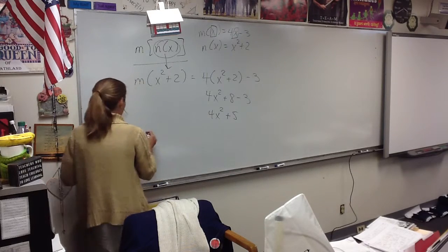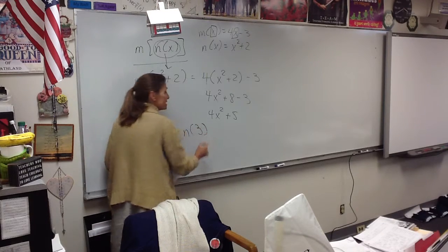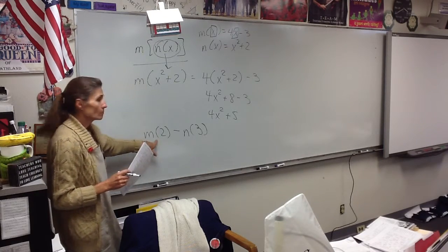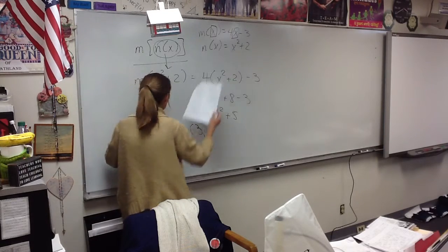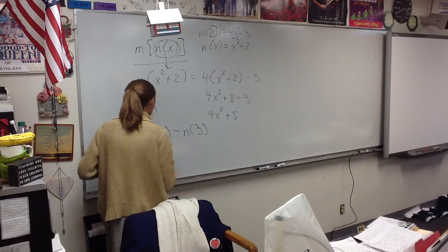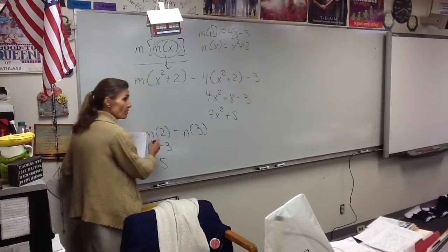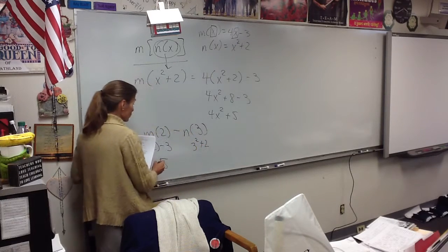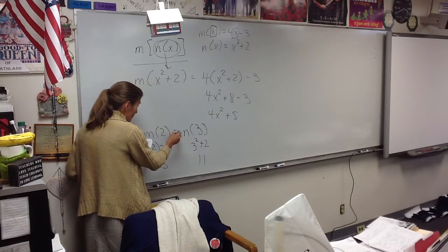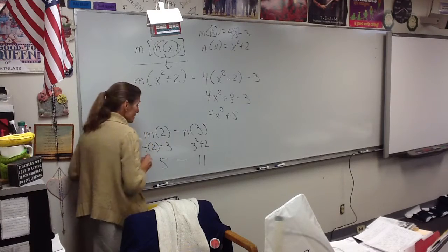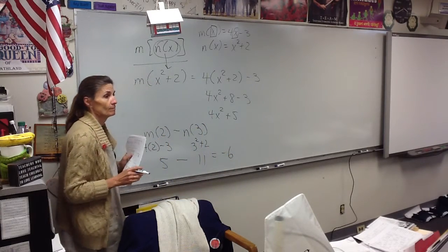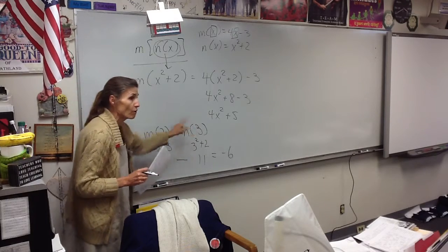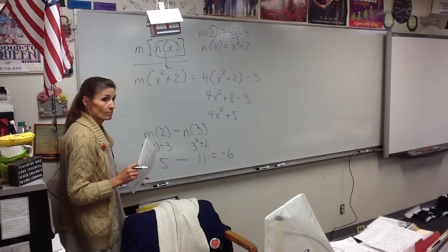How about b? m of 2 minus n of 3. Put in the 2 in the m function. So that would be 4 times 2 minus 3. What does that equal? 5. Everybody okay with 5? Now what about n of 3? That would be 3 squared plus 2, which is 11. And what am I doing with those two numbers? Subtracting. So what's the answer? Negative 6.